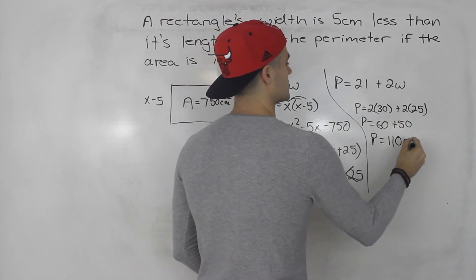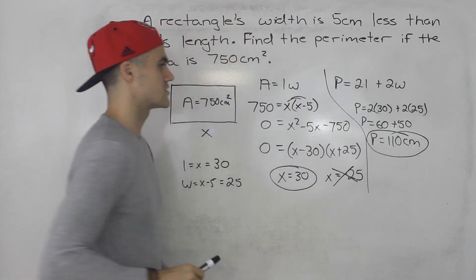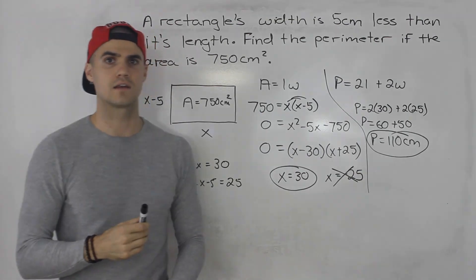This gives you 110, and this is in centimeters. So the perimeter of this rectangle is 110 centimeters.